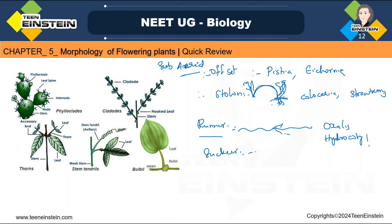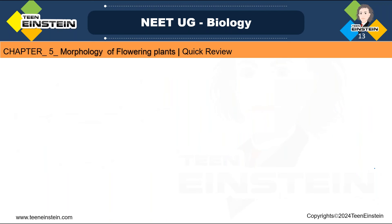Next is sucker. Sucker grows horizontally under the soil initially, and later grows upward. Examples: mint, rose, chrysanthemum. These are the examples for sucker.